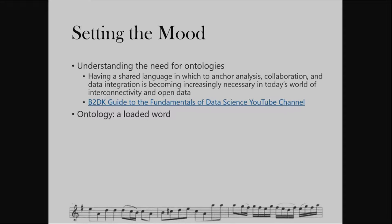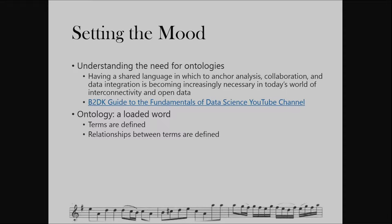I'm kind of boiling it down to three main things: terms are defined, the relationship between the terms is defined, and those terms are arranged into a hierarchy. That sounds easy, right? What's the problem? Why is this so hard?